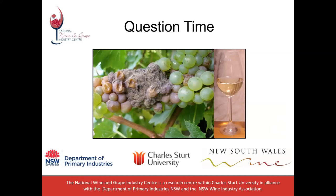A question from Scott: have you done any work on gluconic acid threshold levels for spoilage, and if so, do these levels measure total gluconic acid? No, we haven't. We have measured gluconic acid in terms of quantifying it from grapes and wine, but we haven't looked at thresholds. The variability in its production is notable — I believe gluconic acid is closely associated with the physiology of the fungus and its growth state.